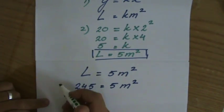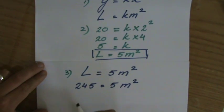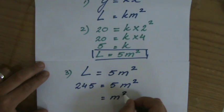And I have to find the value of m. And that is my third step. Okay? So I have to rearrange the formula. I'll divide both sides by 5.